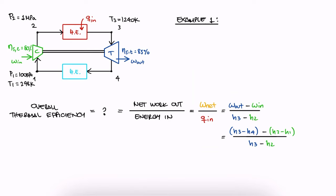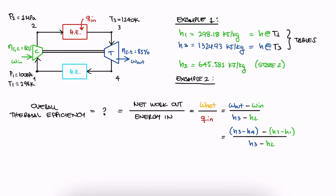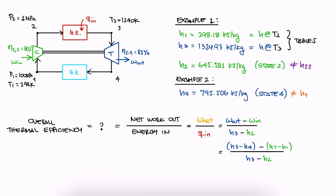From examples 1 and 2, we already found h1 and h3 from the given temperature information, and, after using the efficiency values for both the compressor and the turbine, we also found the specific enthalpy values for the real states 2 and 4, which are not the same as the isentropic states 2s and 4s. If you don't know where these values are coming from, make sure to watch the previous two example videos.